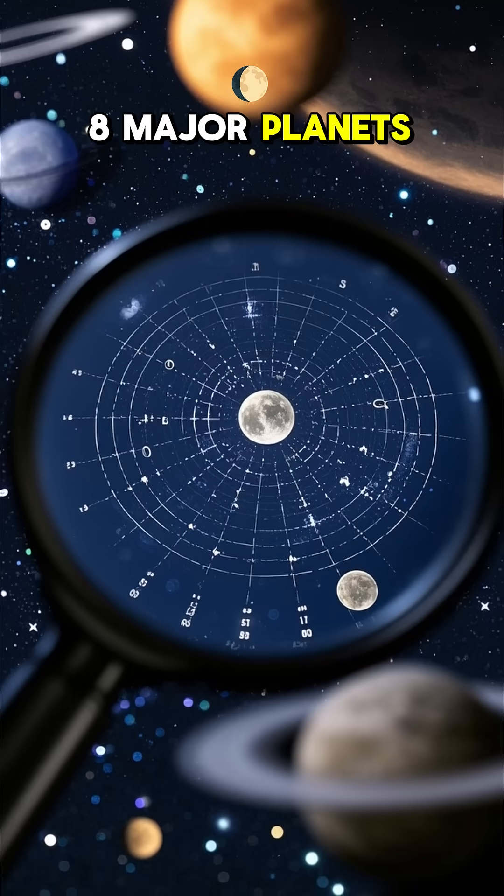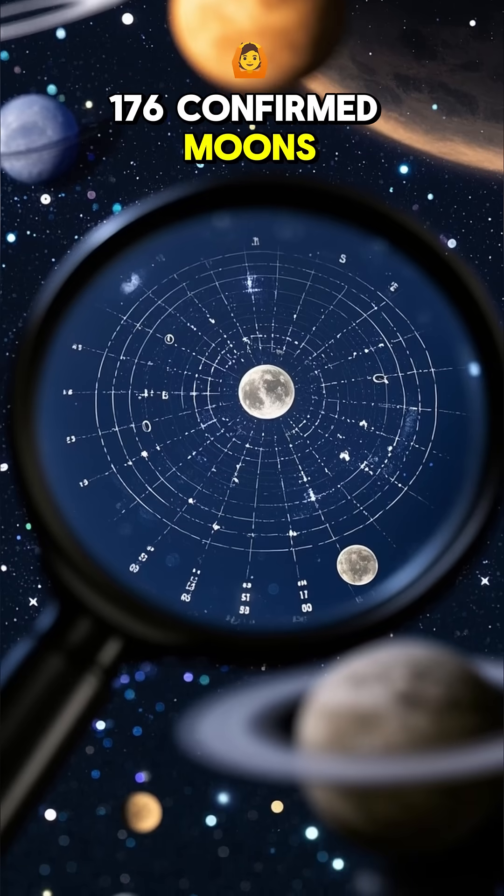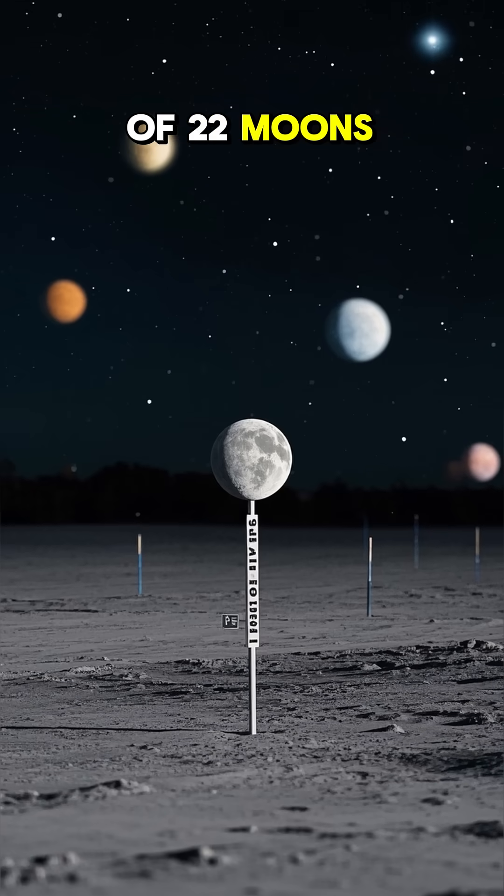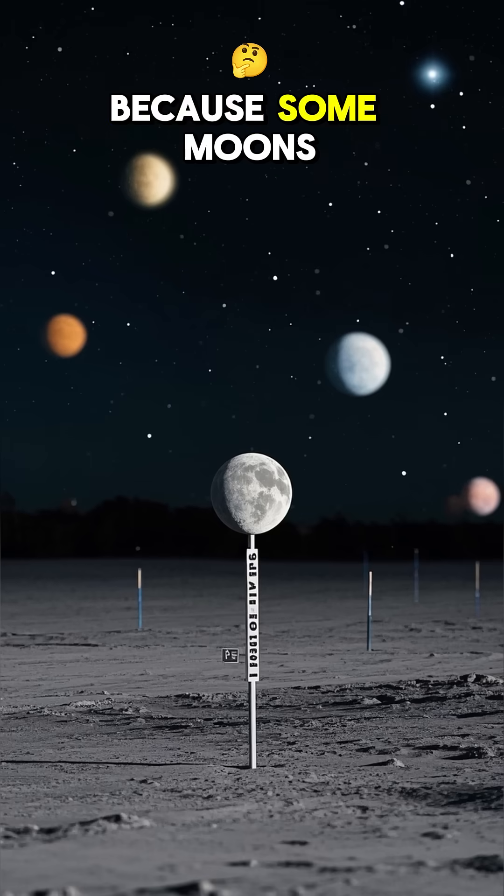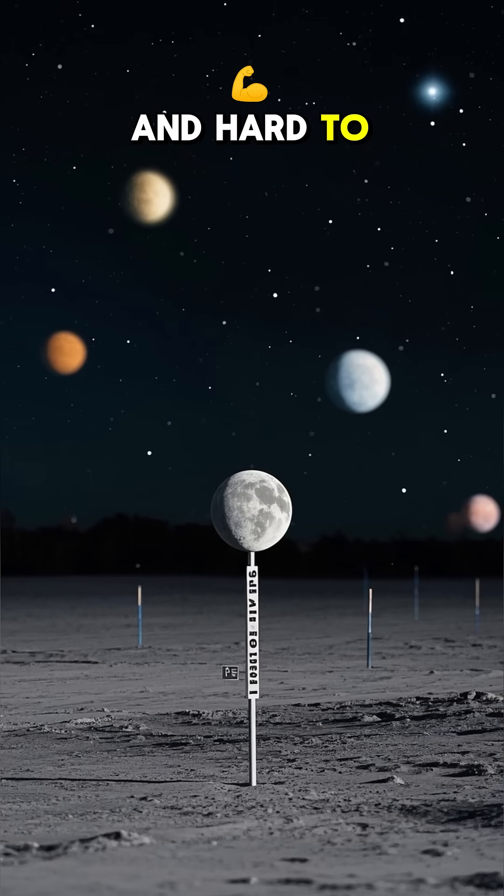Eight major planets have more than 176 confirmed moons. That's an average of 22 moons per planet. But the real number could be much higher because some moons are really small and hard to spot.